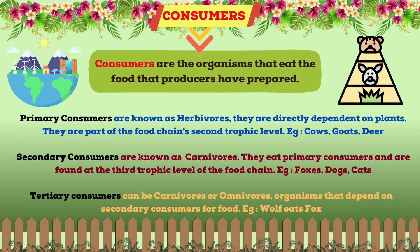Consumers are organisms that eat the food that producers have prepared. Consumers are in three stages: primary consumer, secondary consumer and tertiary consumer. Primary consumers are known as herbivores — they are directly dependent on plants and are part of the food chain's second trophic level, e.g. cows, goats and deer.